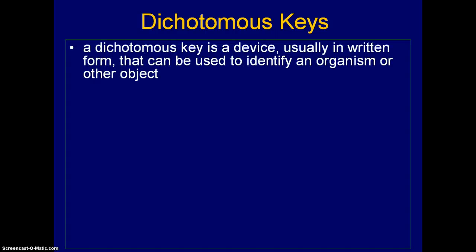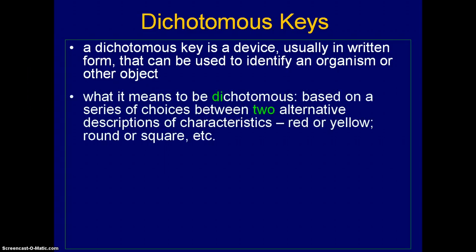A dichotomous key is a kind of device, usually in written form, that can be used to identify something like an organism or any other object. The root of the word dichotomous — 'di' — means two, and this is really the key aspect: it's based on a series of choices between two different things as you move through the key. You keep deciding between two alternatives, and then it takes you to two more alternatives and so on until you reach your destination.